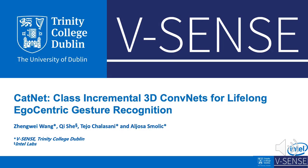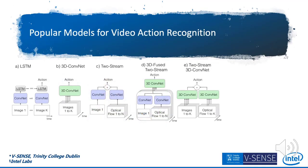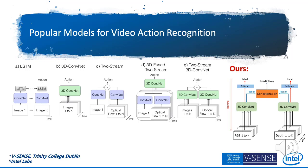Today, I'm going to present our work, Canate, a lifelong learning framework for egocentric gesture recognition. Egocentric gestures can be acquired by a hand-mounted RGB-D camera, so we can get two different modality data: one is RGB video and another is depth video. These are very popular modalities in the area of video action recognition. Our work basically reuses the two-stream architecture as it takes two different modality inputs and has very good performance.